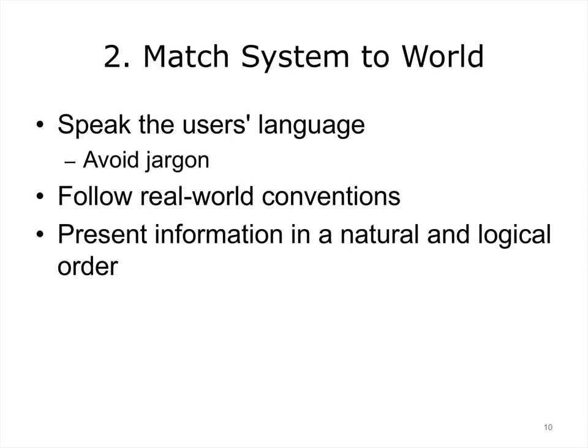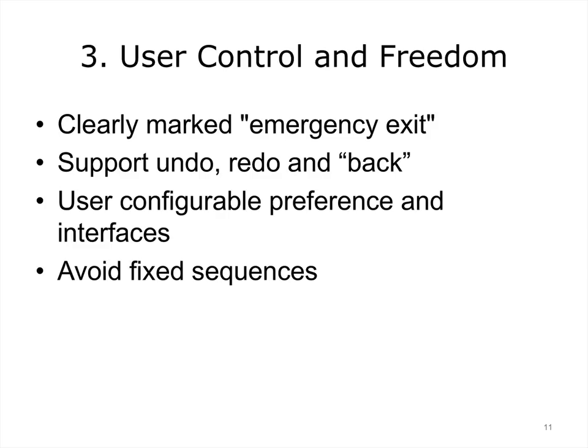The system should speak the user's language with familiar words, phrases, and concepts rather than system-oriented terms. It should follow real-world conventions, making information appear in a natural and logical order. One of the most frustrating experiences is if one of your actions causes you to unexpectedly leave the program — for example, as people transition to web-based email applications, they need to remember that closing a window won't only close a message but will exit the program. Systems should support multiple undos and redos. There are many systems in which backward navigation is not permissible, and this can be very frustrating.